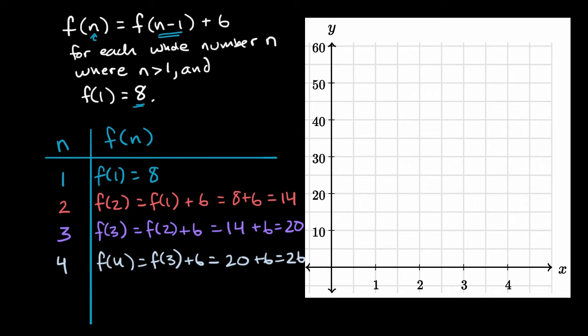So you might've noticed a pattern here. We start with, when on our first term, the value of the function is eight. And then what did we do? We added six. And then to get to the next term, we added six again. And then we added six again. And so we should see that visually when we actually try to graph it.